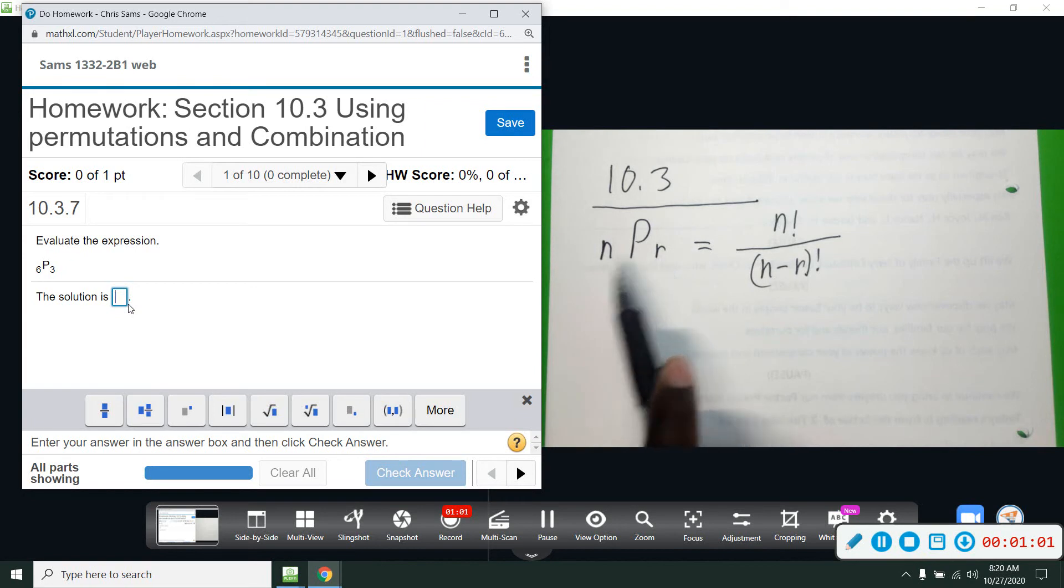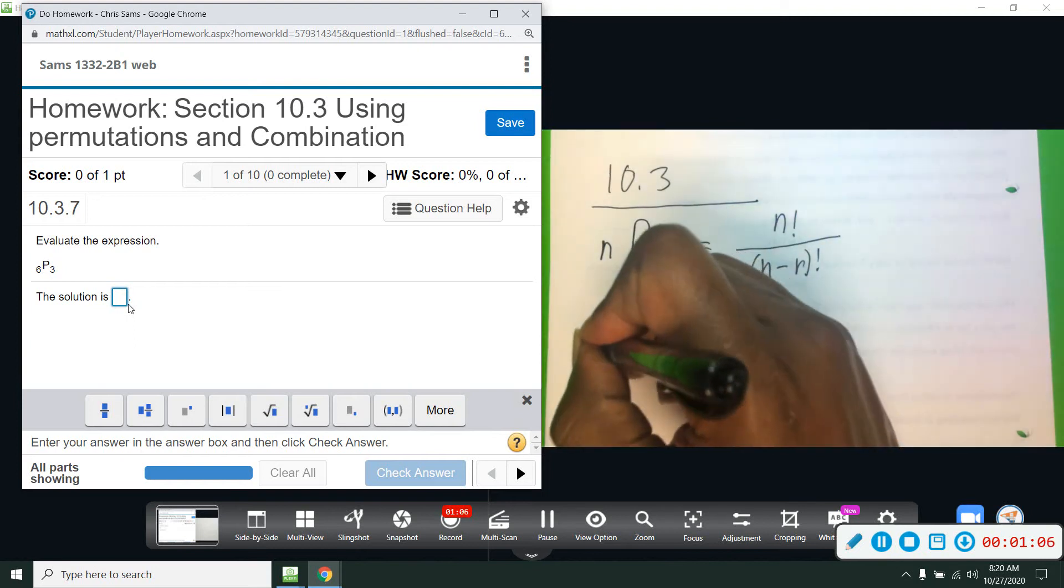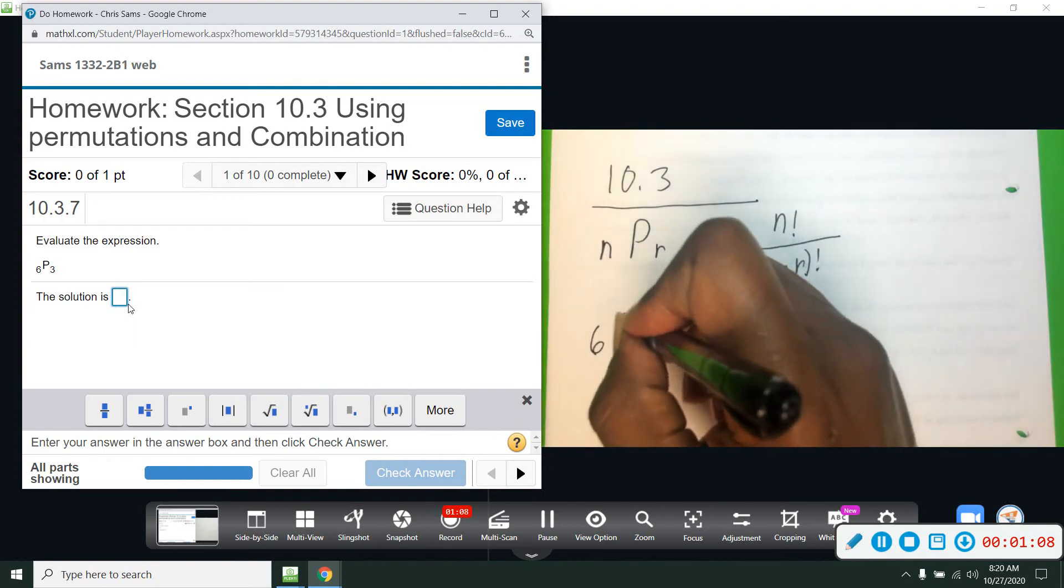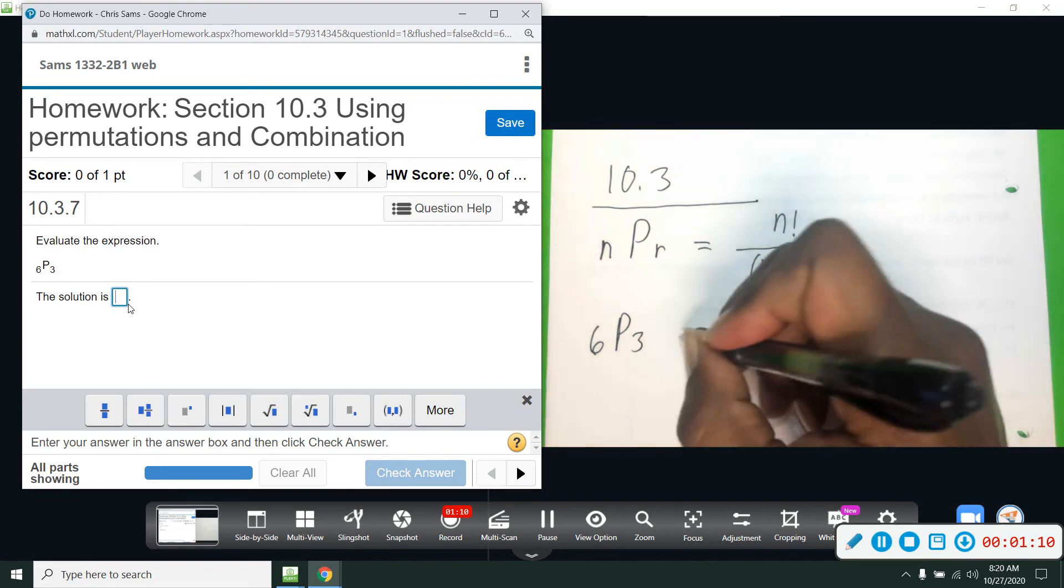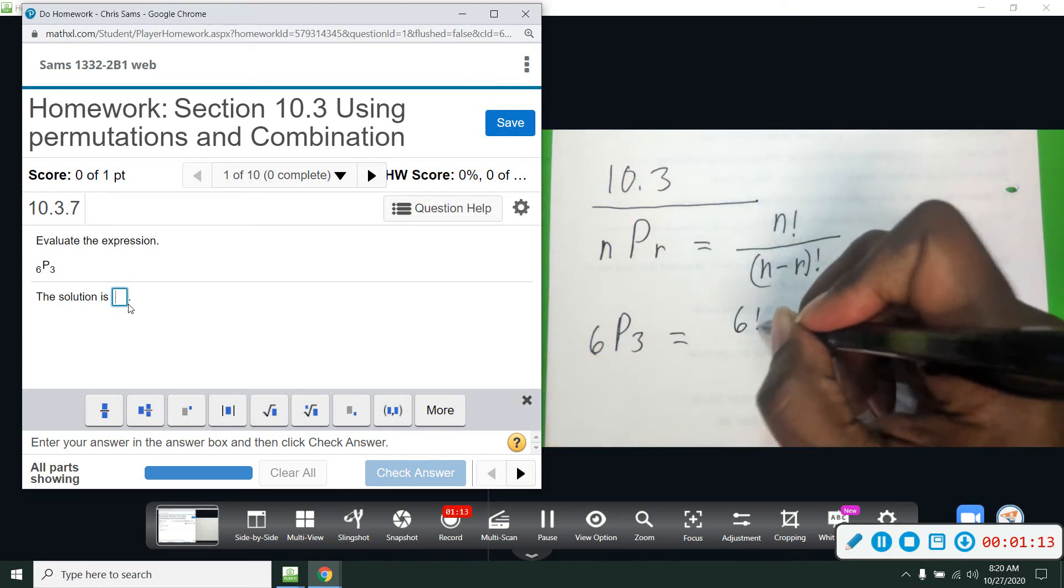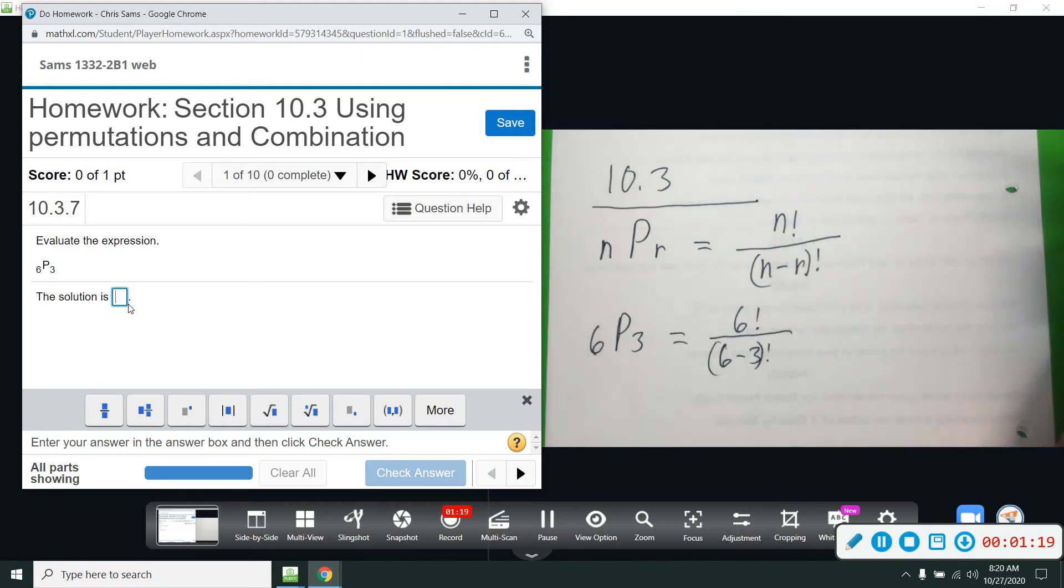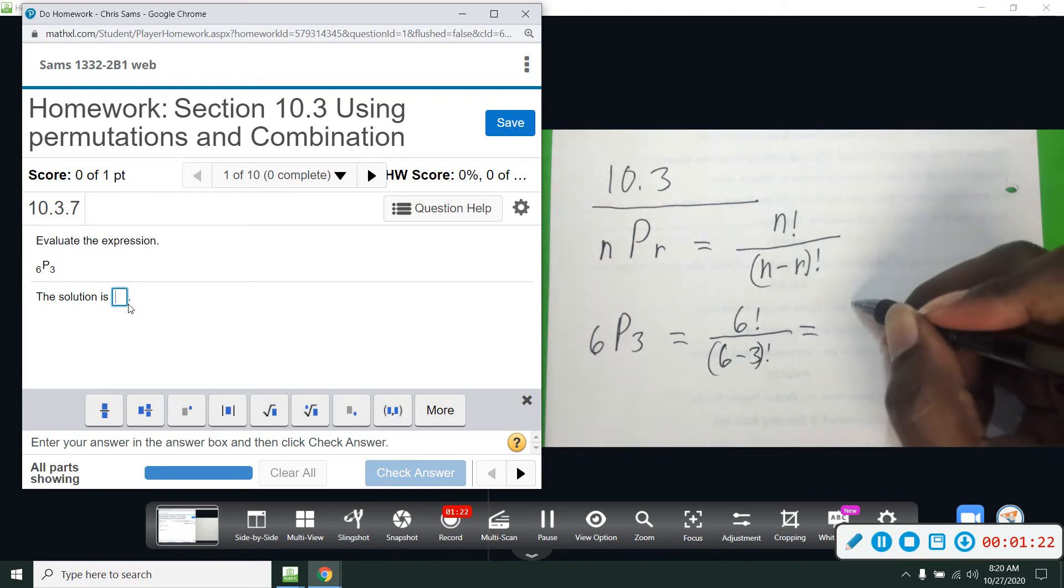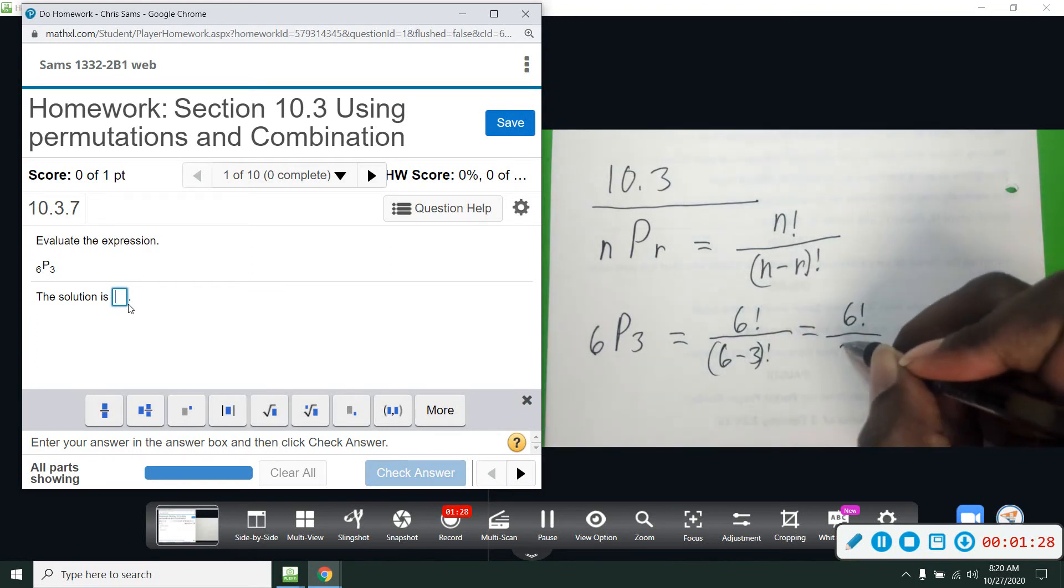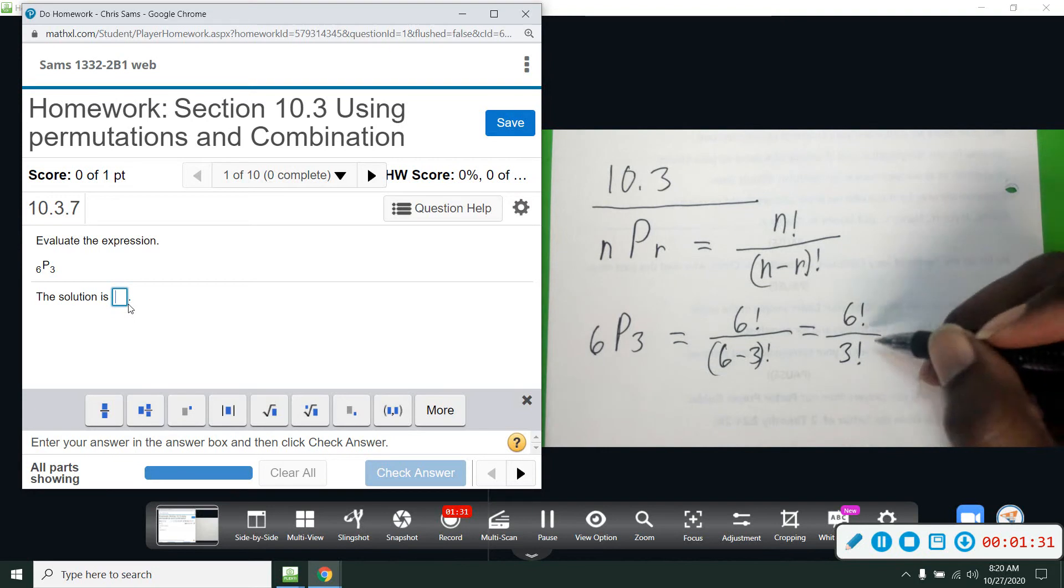Okay, so with this first problem we have 6P3. That will look like this: 6 factorial divided by (6 minus 3) factorial. I'm going to simplify. We have 6 factorial; 6 minus 3 is 3 factorial. Now we're going to start spelling this out.